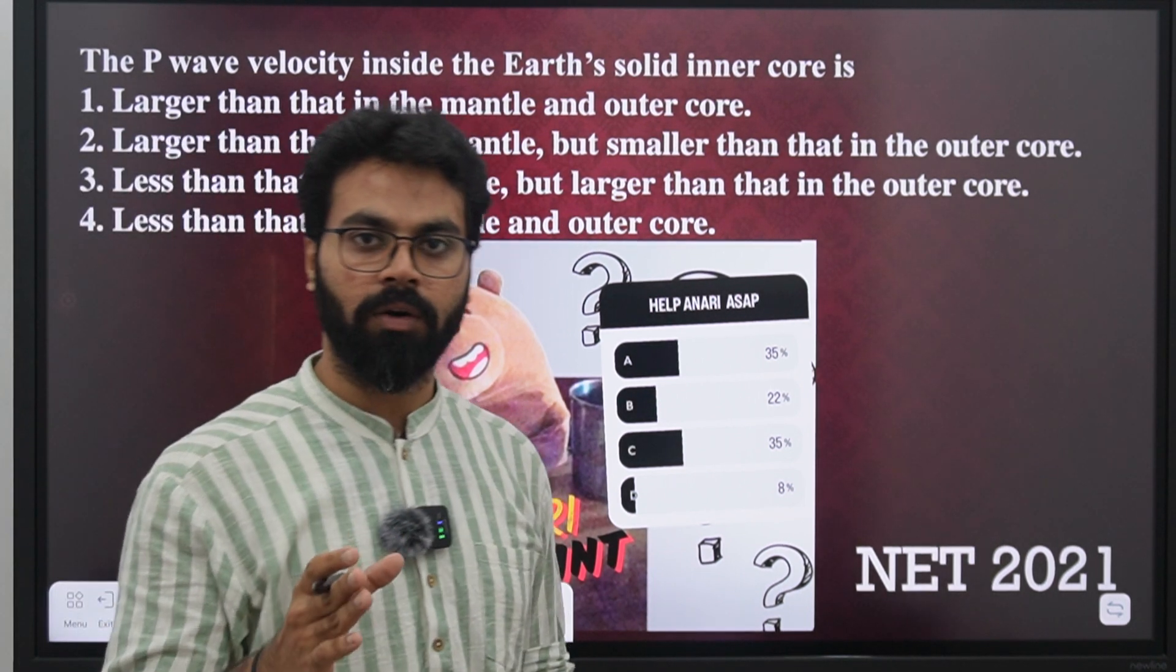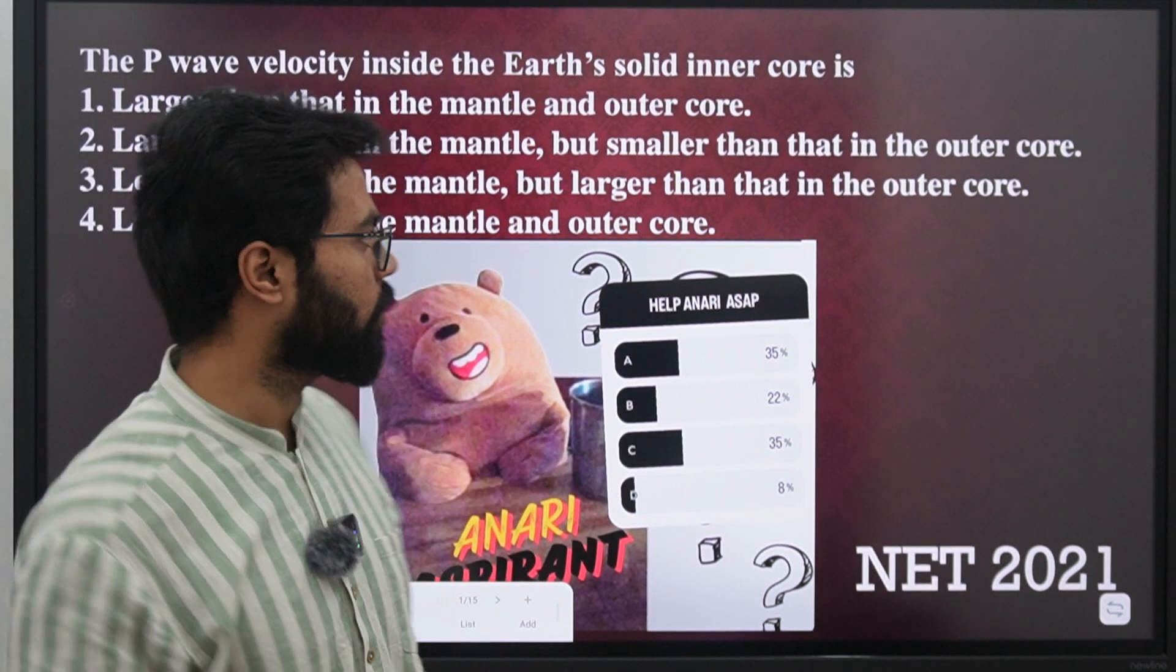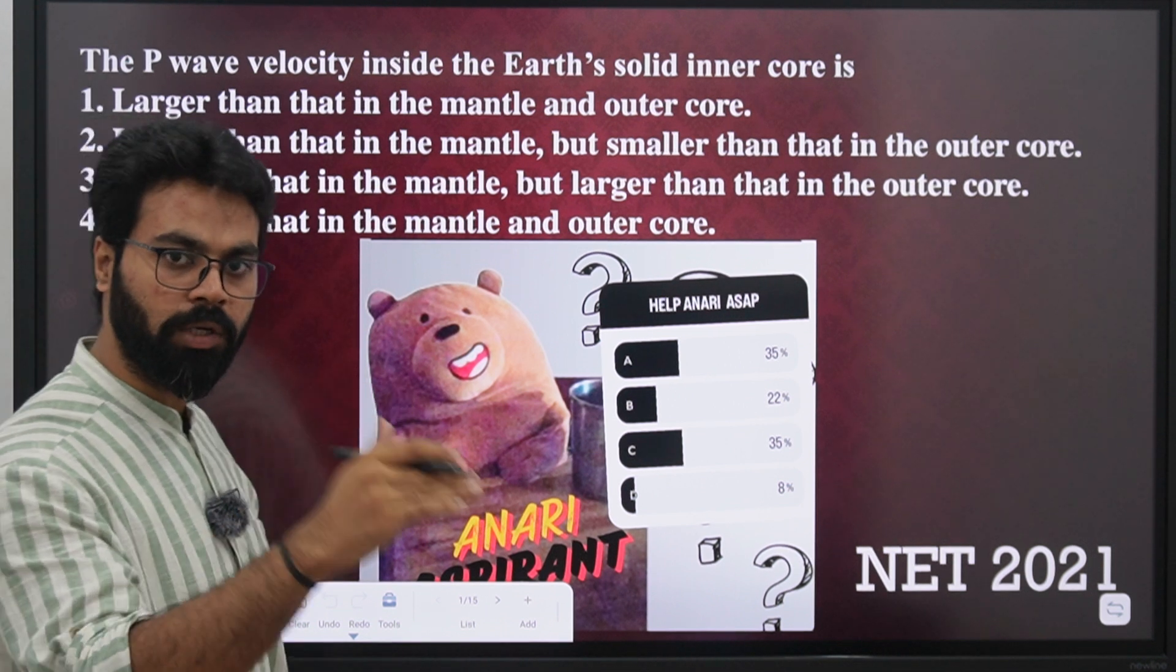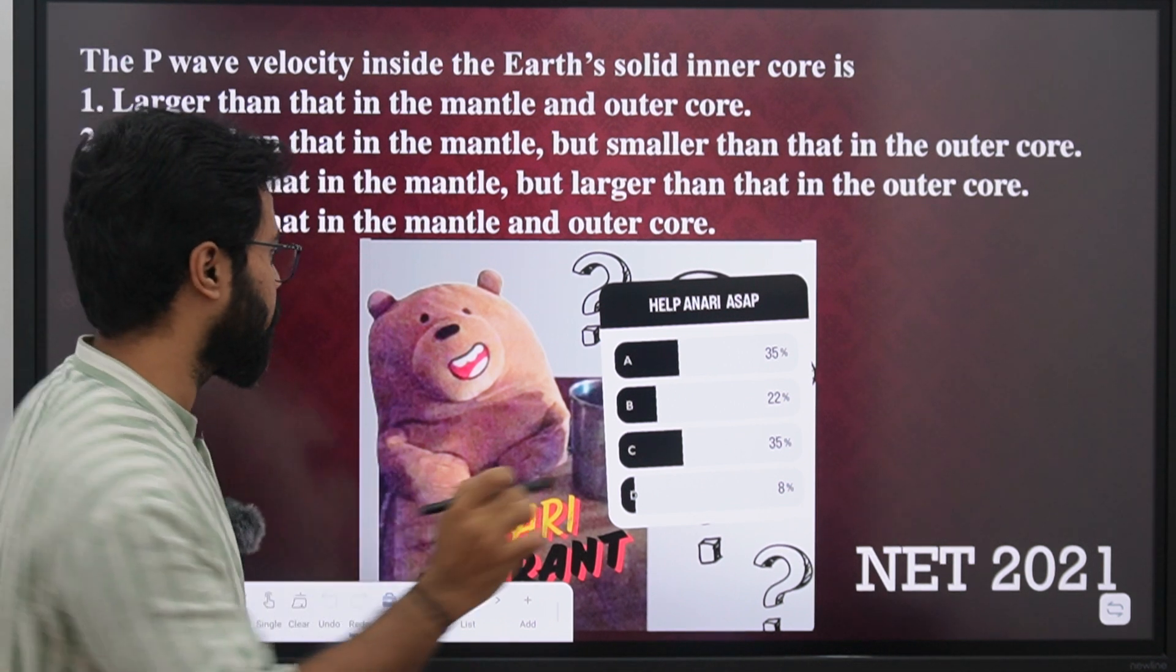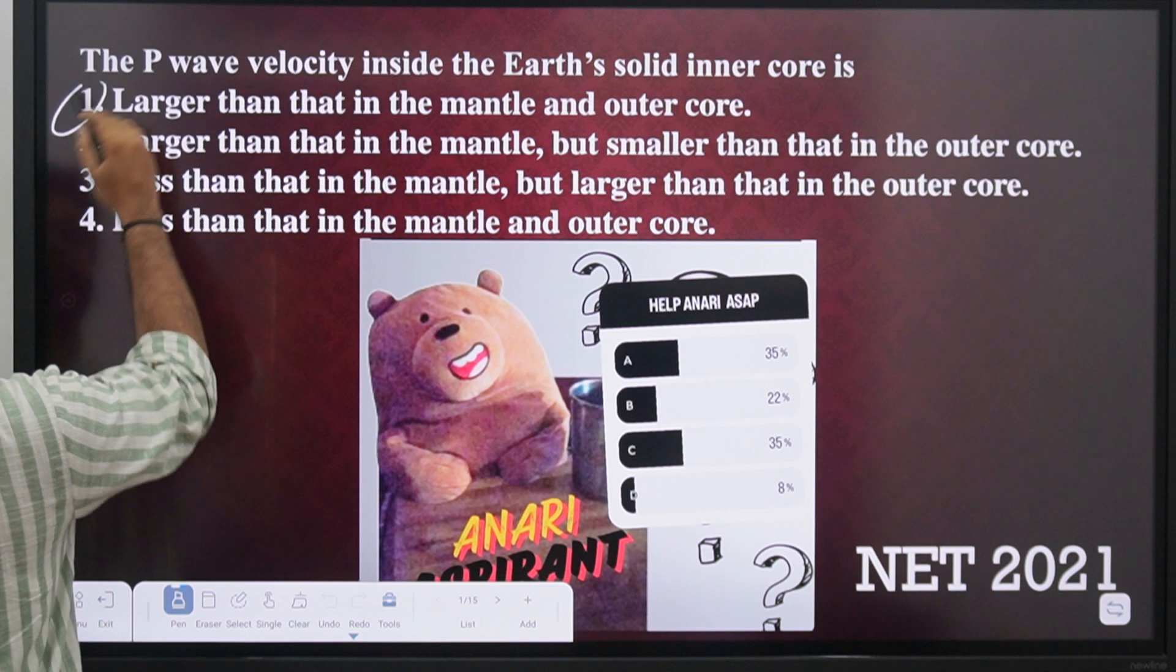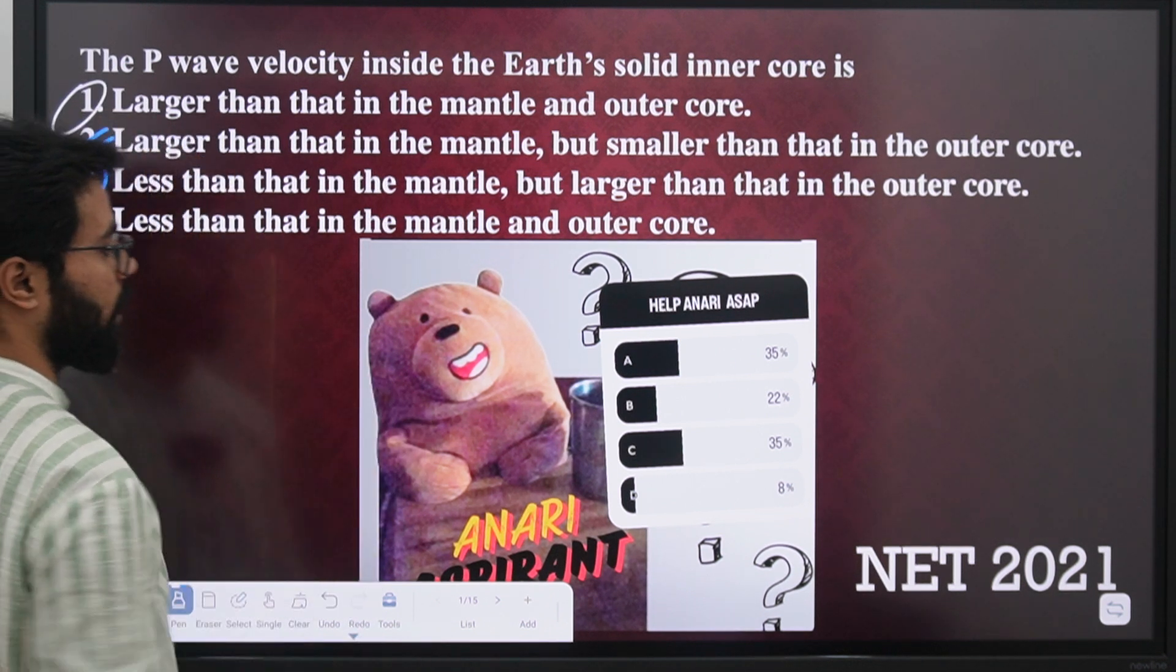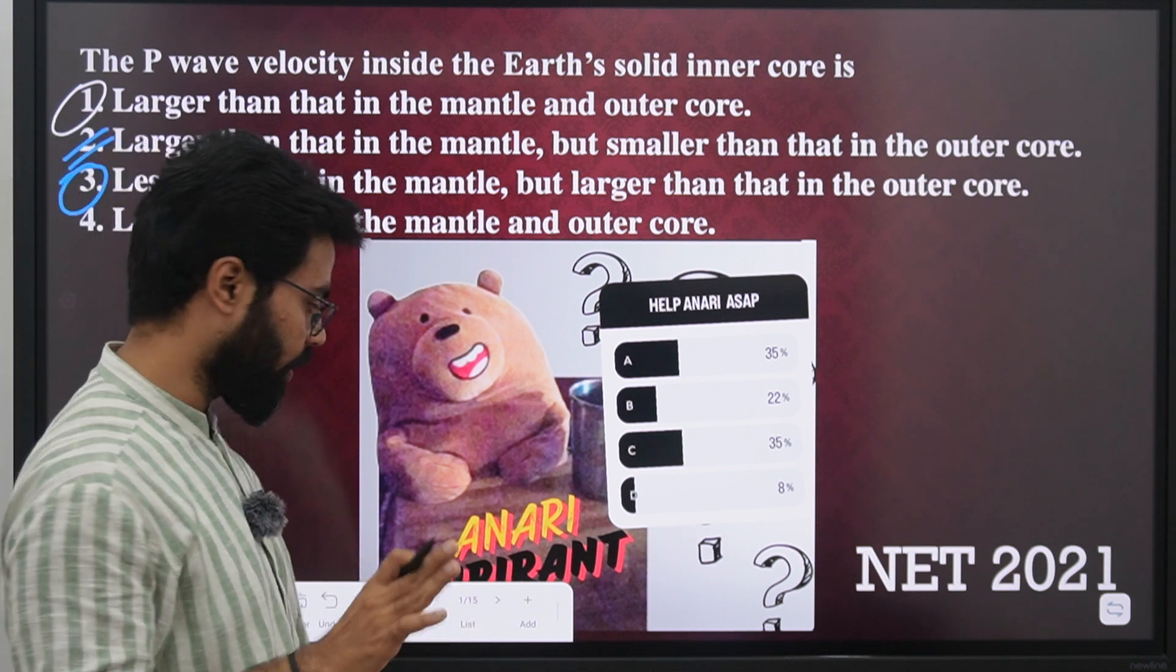Hello everyone, yesterday on our Instagram page we posted this question about P-wave velocity with respect to inner core, outer core, and mantle. Many students are confused between options A and C, and some people also think that the answer would be B. But before moving on to the solution, I really want to show you something.